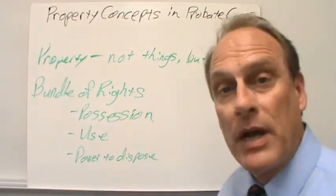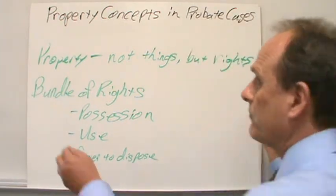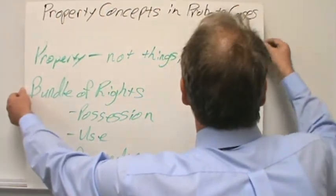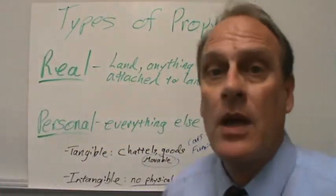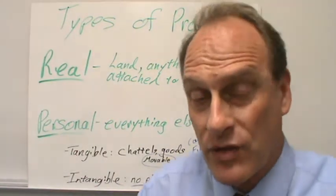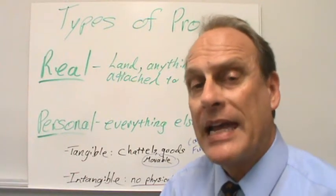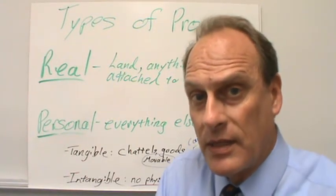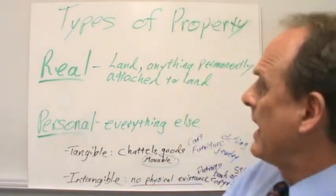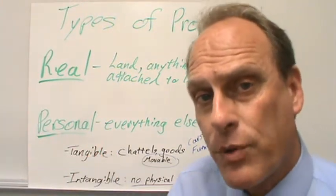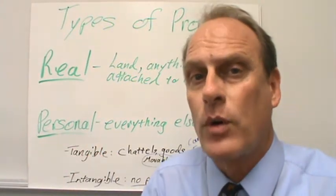Those are our bundle of rights that we have when we own property. So what kind of property is there? There are several types. We've got real property, and real property is anything that is the land or anything permanently attached to the land. And then we have personal property, and that's everything else.